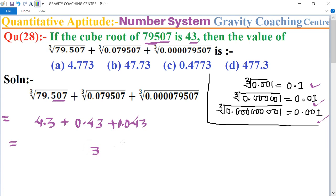4.3 plus 0.43 plus 0.043 equals 4.773, which is the required answer. So option (a) is the correct answer.